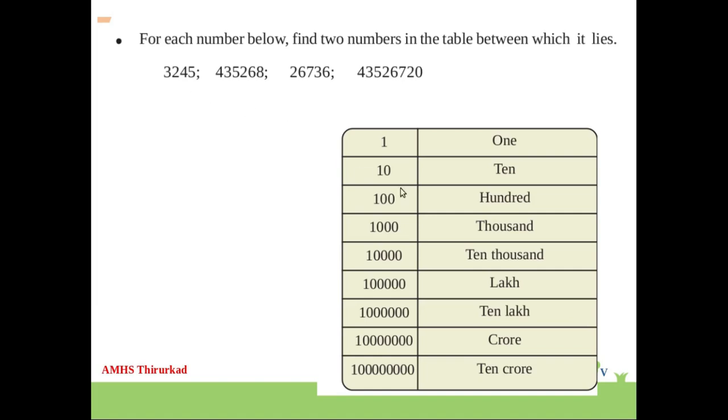Then 4 digits number is 1,000. 5 digits number is 10,000. Then 3,245 is between 1,000 and 10,000.